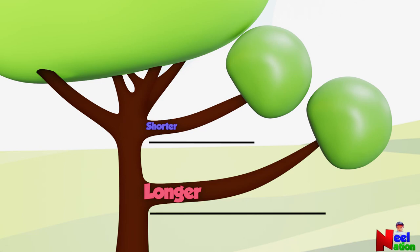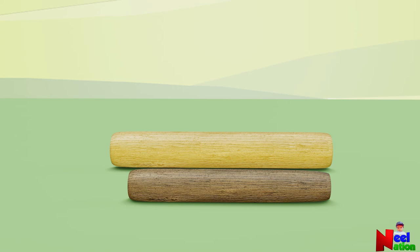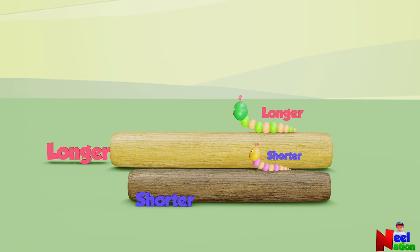Here you have two logs on the ground. Which log is longer and which one is shorter? Yellow log is longer. Brown log is shorter. Here comes two cute caterpillars. Which one is longer and which one is shorter? Green caterpillar is longer. Yellow caterpillar is shorter. Awesome.